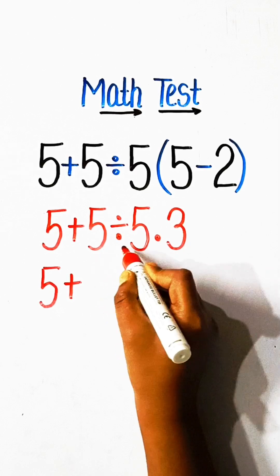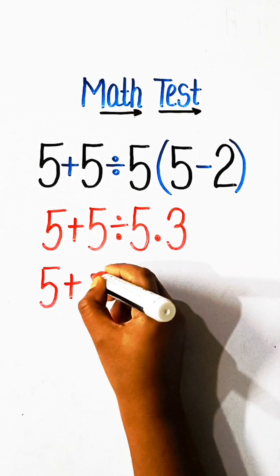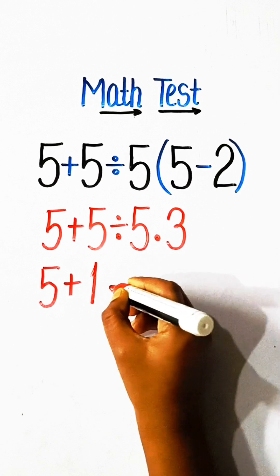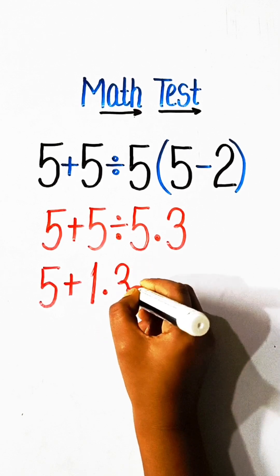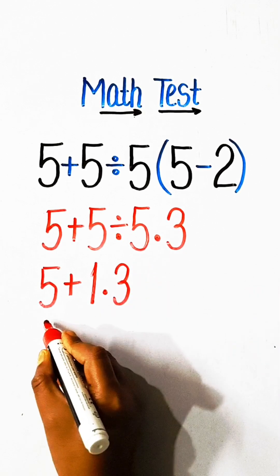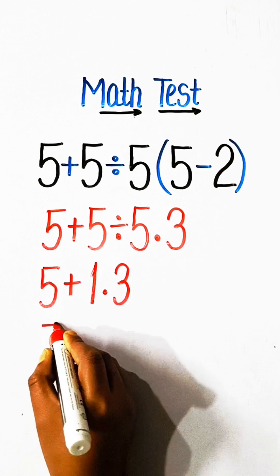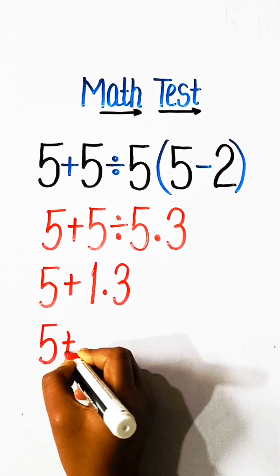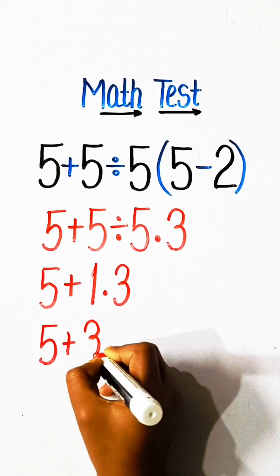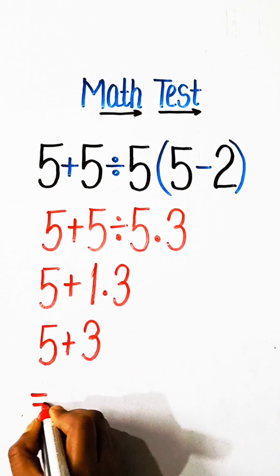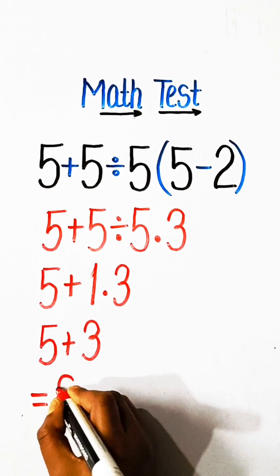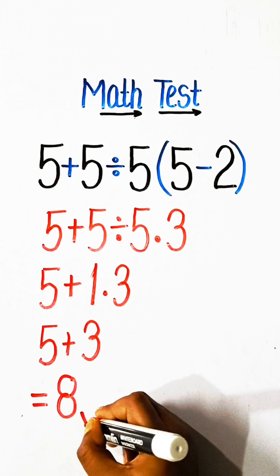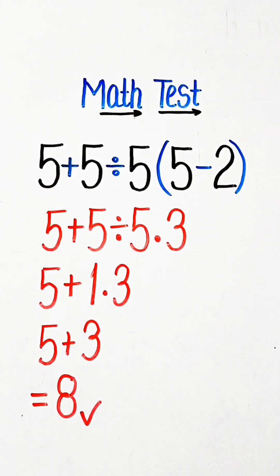5 divided by 5 is 1, multiply by 3 is 3. 5 plus 3 equals 8. So 8 will be our correct answer.